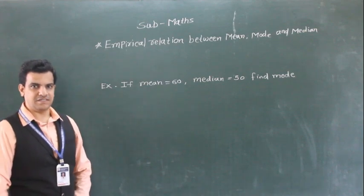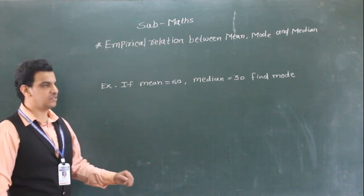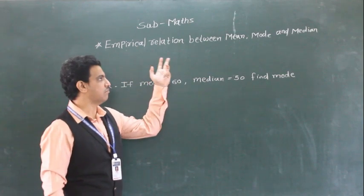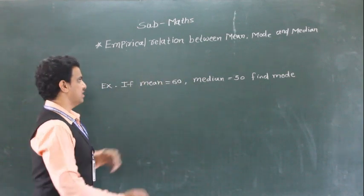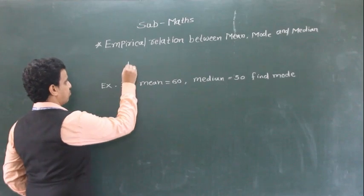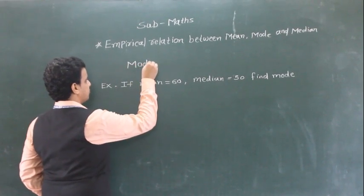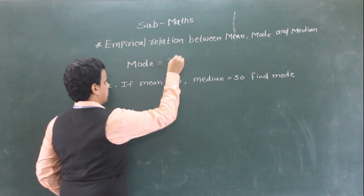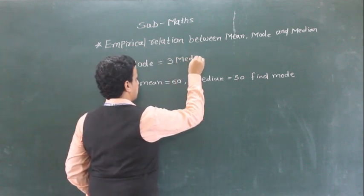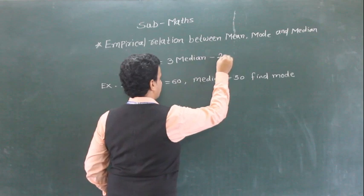Hello students. In this video we are going to learn about the empirical relation between mean, mode, and median. This empirical relation is: mode is equal to 3 median minus 2 mean.